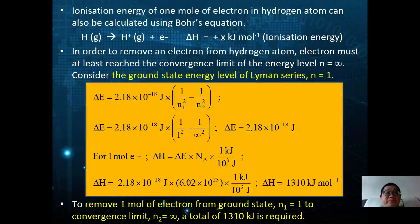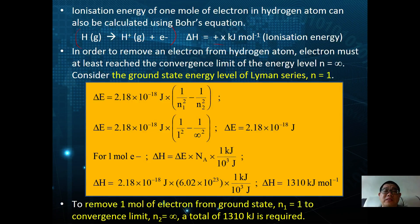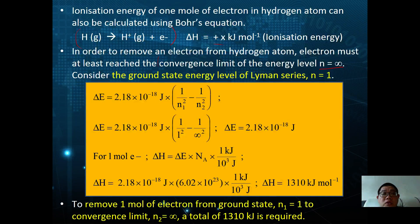The ionization energy of one mole of electrons in a hydrogen atom can be calculated using the Bohr equation. The ionization equation is: H(g) → H⁺(g) + e⁻, with ΔH positive (in kJ/mol). To remove an electron, it must reach the convergence limit where n = ∞. Substituting into the Bohr energy equation: ΔE = 2.18 × 10⁻¹⁸ J × (1/1² − 1/∞²) = 2.18 × 10⁻¹⁸ J × (1 − 0) = 2.18 × 10⁻¹⁸ J per electron.